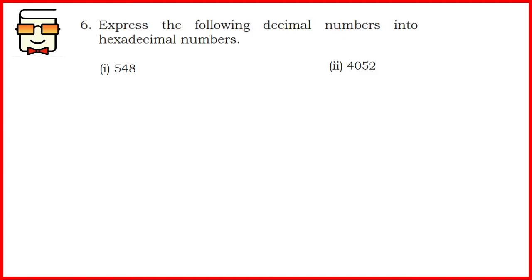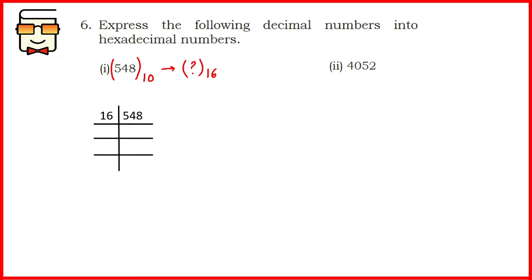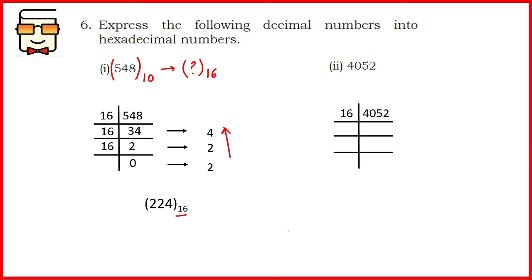Coming to question number 6: you have to convert the given decimal numbers into hexadecimal numbers — from base 10 to base 16. To do this, divide the number by 16 and collect the remainders. For 548 divided by 16: you get 34, then 2, then 0 as successive quotients, with remainders 4, 2, and 2 respectively. Collecting the remainders in reverse order gives the final answer as 224 in hexadecimal.